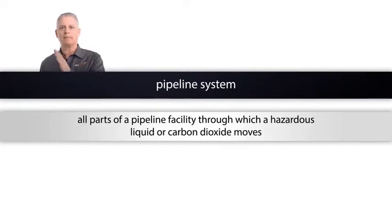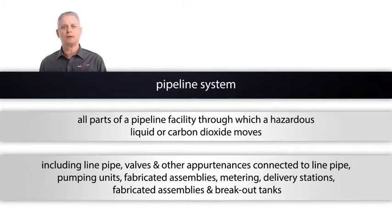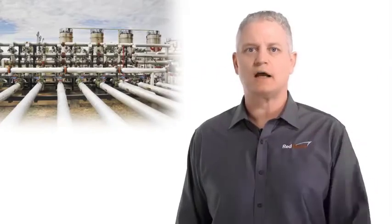Now let's talk about a pipeline. A pipeline or pipeline system means all parts of a pipeline facility through which a hazardous liquid or carbon dioxide moves in transportation, including but not limited to line pipe, valves and other appurtenances connected to line pipe, pumping units, fabricated assemblies associated with pumping units, metering and delivery stations, and fabricated assemblies therein, as well as breakout tanks.